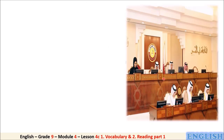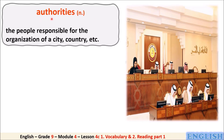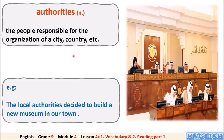Look at the people in this picture — they are called 'authorities.' It is a noun which means the people responsible for the organization of a city, country, etc. For example, the local authorities decided to build a new museum in our town.